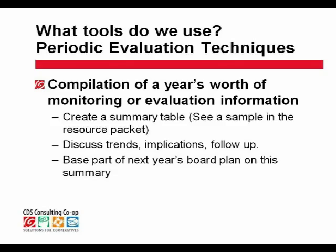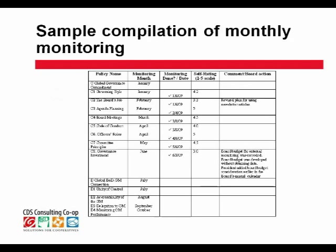The next thing we need to talk about are different kinds of tools you might use to evaluate what's going on with your board on a longer time frame and from a broader perspective. There are tools you might consider using periodically, either quarterly or annually. The most common, for boards using policy governance, is similar to what you might do in evaluating your general manager. You might consider putting together a summary table capturing all the monitoring you've done over the course of a year, then looking at it to see whether there are any patterns, trends, or concerns that you might not have noticed month to month.